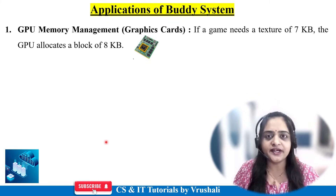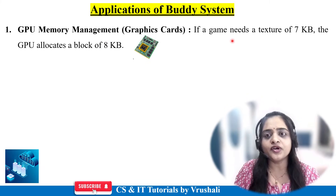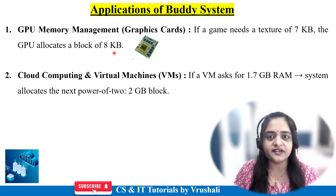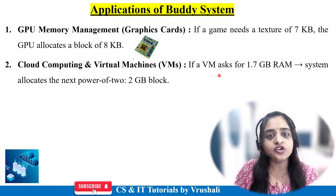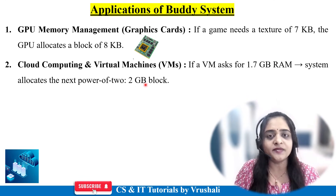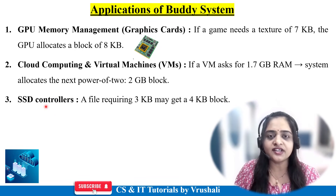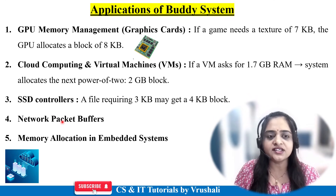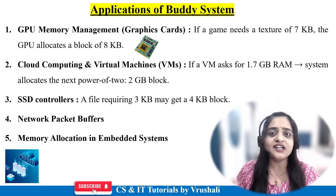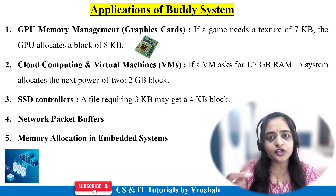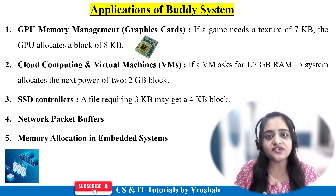What are the applications of the Buddy System? The Buddy System is generally used in memory management for graphics cards. For example, if a game needs 7 KB for texture, the GPU allocates a block of 8 KB, which is the best fit. It is also used in cloud computing and virtual machines — if your virtual machine requests 1.7 GB RAM, the system allocates the nearest power of 2, which is 2 GB. Additionally, it is used in SSD controllers, network packet buffers, and memory allocation in embedded systems — where sensors and registers require just 1 KB or 2 KB, so memory is allocated in powers of 2 like 2 KB, 4 KB, and so on. That's why the Buddy System is used in operating systems to reduce memory wastage.